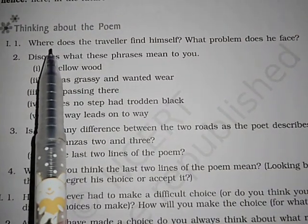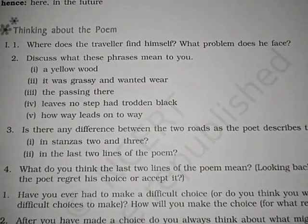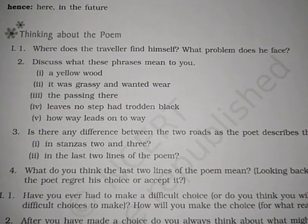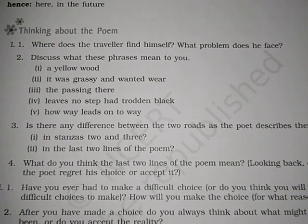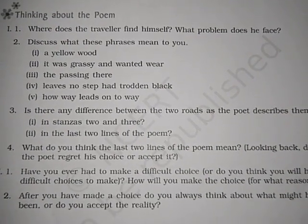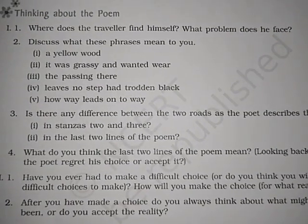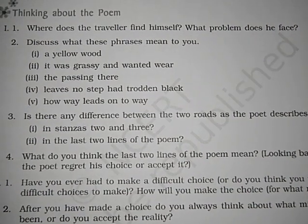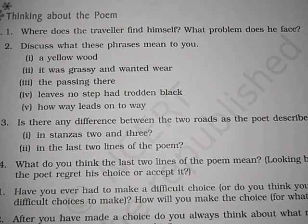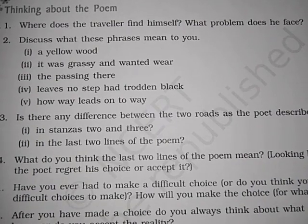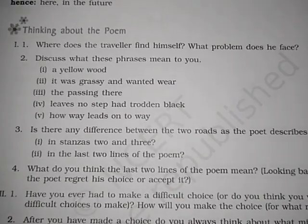Let's answer the following: where does the traveler find himself and what problem does he face? The traveler is traveling through a road in a forest, and at the point where one road is diverged into two, he faces a confusion or dilemma about which road he should take. He prefers the road less traveled by. This confusion of which road should be preferred is the problem faced by the traveler.